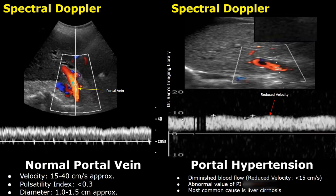In cases of portal hypertension, the blood flow velocity can be reduced — it will be less than 15 centimeters per second, and in this case it is less than 10 centimeters per second. The value of the pulsatility index will also be abnormal. We can also see a thrombus within the portal vein, which can also cause portal hypertension.